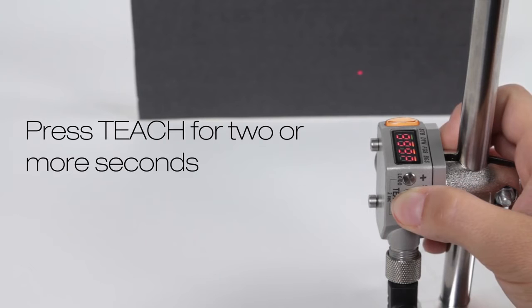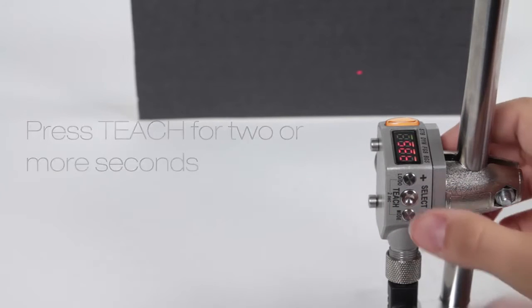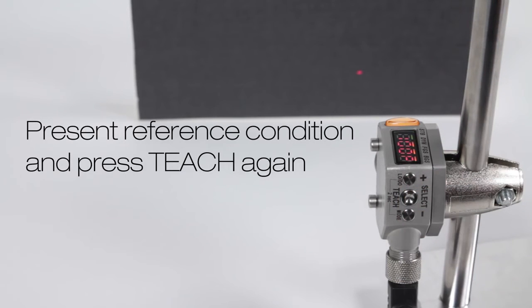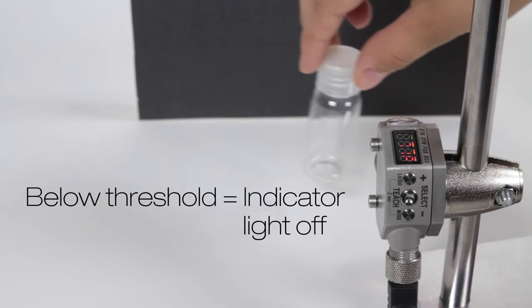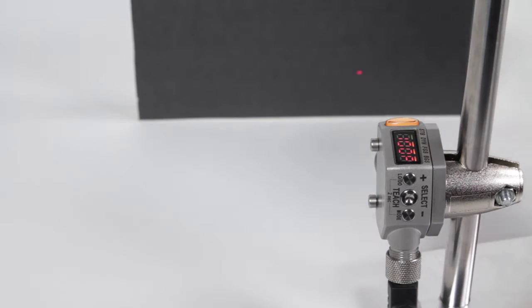Press the teach button for two or more seconds to begin dual teach mode. Present a reference condition and click the button again to teach the reference condition. The sensor learns this as a 100% match condition and will look for changes in distance, intensity, or a second reflection condition. The Q4X can reliably detect clear or transparent objects including files, films, and bottles.